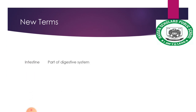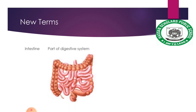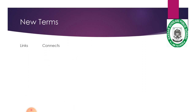Next one is intestine. Intestine is a part of the digestive system. We eat food and it is digested in our body — in our digestive system. The human body has two intestines: small intestine and large intestine. The intestine is part of the digestive system, and the food that we eat is digested in our body through it.